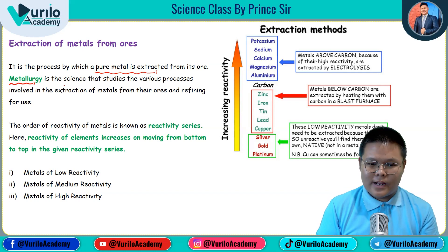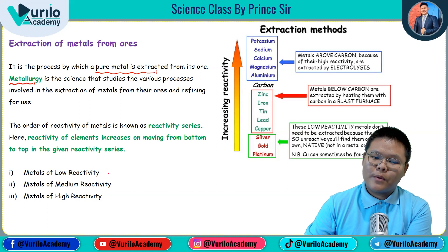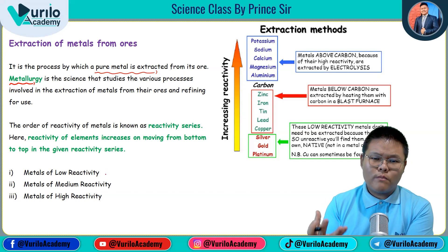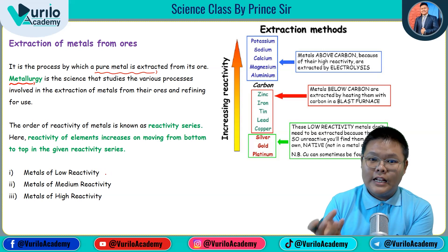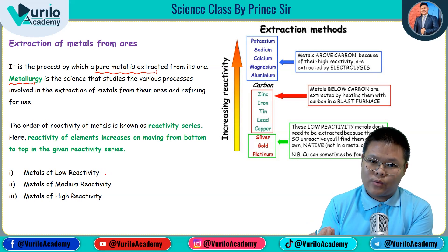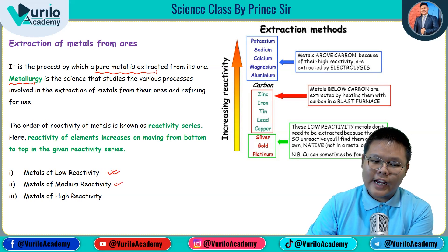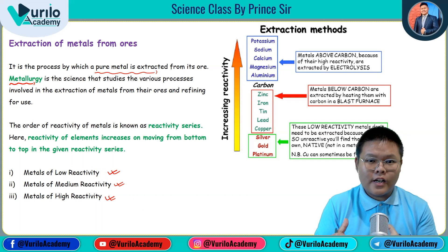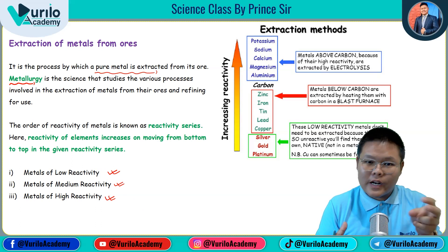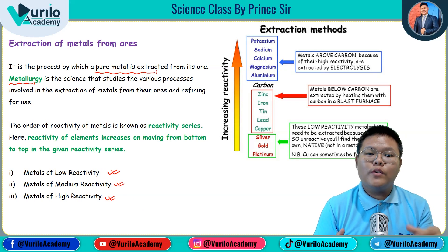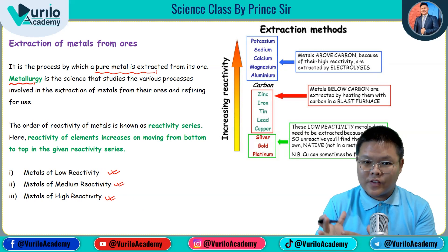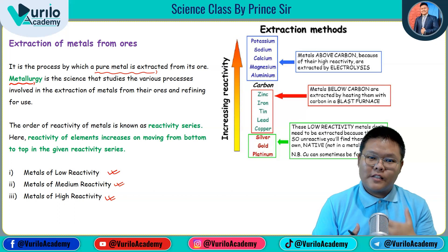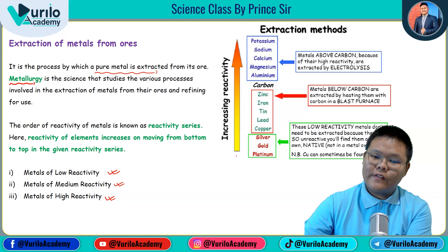Now, the reactivity series. Metals are categorized into three groups: first, metals of low reactivity; second, metals of medium reactivity; and third, metals of high reactivity. Metals of high reactivity are highly reactive, followed by medium reactive, and then low reactivity.